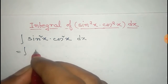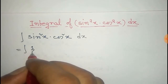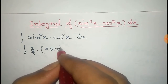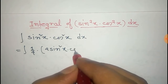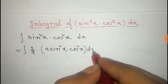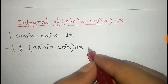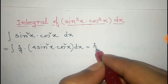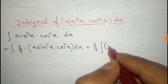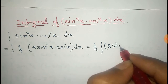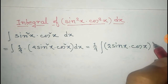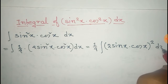We can write this as equals to integral — taking one-fourth common — one-fourth into four sin²x · cos²x dx. We take one-fourth out of the integral, and the remaining term can be written as (2sinx · cosx)² dx.